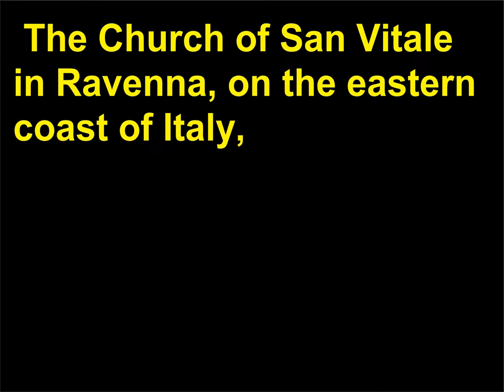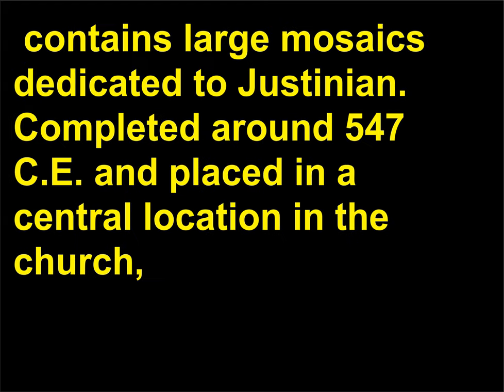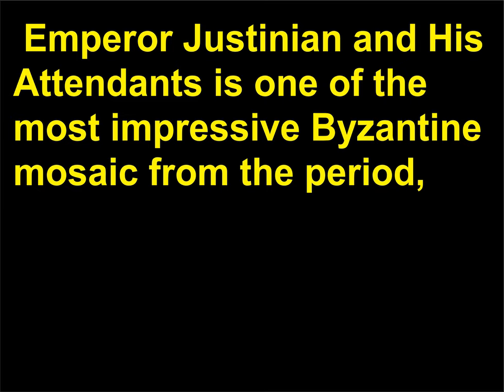The Church of San Vitale in Ravenna, on the eastern coast of Italy, contains large mosaics dedicated to Justinian. Completed around 547 CE and placed in a central location in the church, Emperor Justinian and his attendants is one of the most impressive Byzantine mosaics from the period.